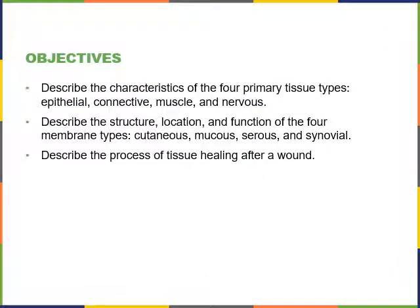We will cover the following objectives: describe the characteristics of the four primary tissue types — epithelial, connective, muscle, and nervous tissues — and describe the structure, location, and function of the four membrane types: cutaneous, mucous, serous, and synovial.